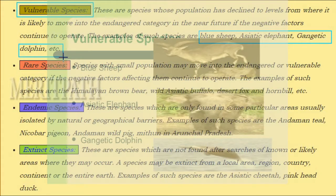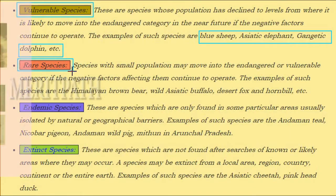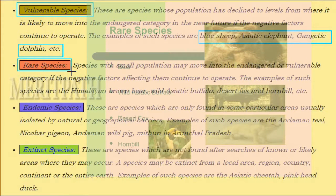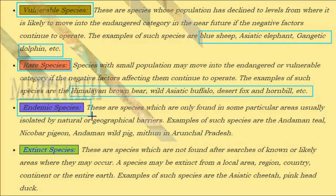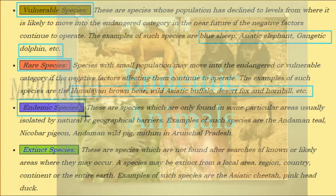Rare species are those with small populations that may move into the endangered or vulnerable category if negative factors continue to operate. Examples include the Himalayan brown bear, wild Asiatic buffalo, desert fox, and hornbill. Endemic species are those found only in some particular areas.